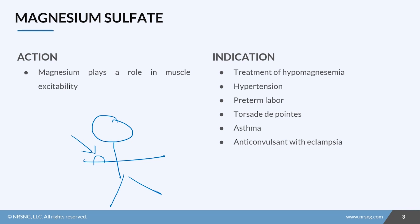We use magnesium sulfate for the treatment of hypomagnesemia, hypertension, preterm labor, scar, torsades, asthma, and as an anticonvulsant with eclampsia.